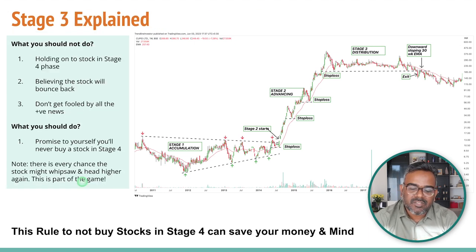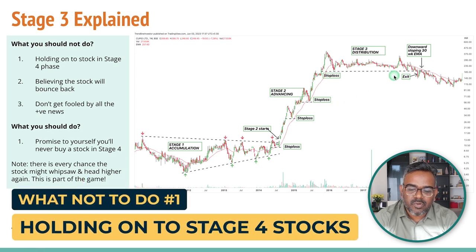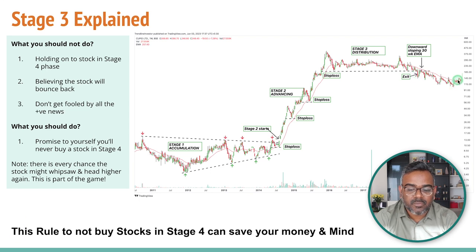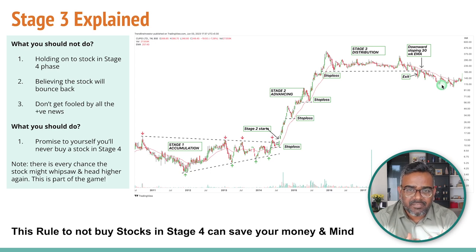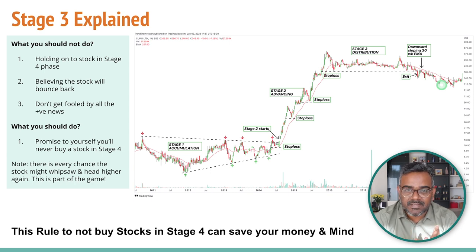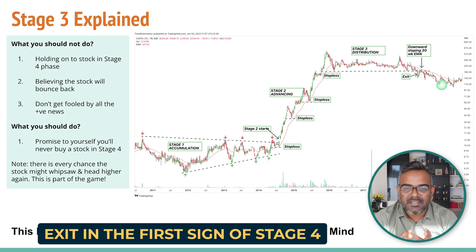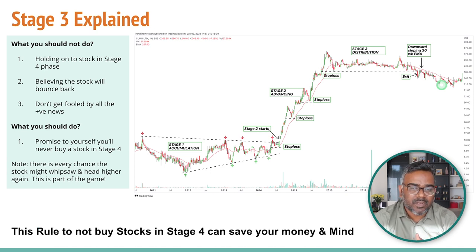What you should not do in Stage 4 is hold on to a stock after it has broken down. It's okay to hold somewhere near the breakdown, but do not hold the stock when it has clearly entered Stage 4 — you are just going to lose more and more money. If you bought a stock at 100 and it goes to 95, and you realize it's Stage 4, it's better to exit at 95 rather than exiting at 70. Exit on the first sign of loss. There are hundreds of other stocks which can make you money.